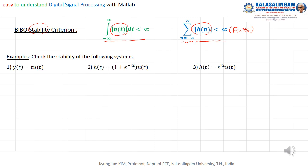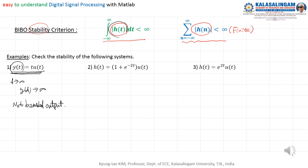Let me check the stability of this kind of system. For the first one, we need to check the impulse response. But here, we do not know the impulse response. However, we can check whether y(T) is infinite or not infinite for all T. You can see here: as T goes to infinite, then y(T) also goes to infinite. Therefore this is not bounded output. Therefore, this is an unstable system.